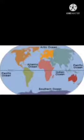We have five oceans and seven continents. The five oceans are: the Pacific Ocean, the Atlantic Ocean, the Arctic Ocean, the Antarctic or Southern Ocean, and the Indian Ocean. The Pacific Ocean is the largest ocean, and the Arctic Ocean is the smallest ocean.